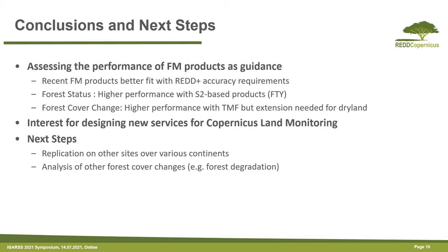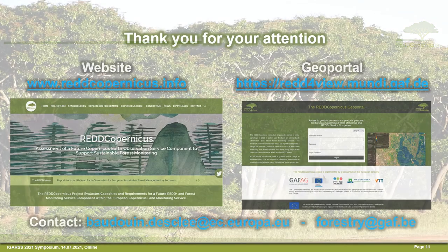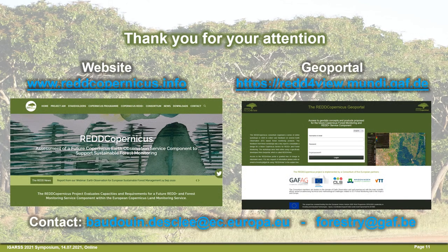The assessment of the performance of forest monitoring products is important as guidance, and these recent products better fit the REDD+ accuracy requirements. For forest status, we have better performance with Sentinel-2 based products like FTI, and for forest cover change, higher performance with TMF, though an extension is needed for drylands. This kind of study is very important for designing new services like the Copernicus monitoring services. The next step is to replicate this analysis on other sites and analyze other forest cover change products. I invite you to visit our website and geoportal for an overview of the different products. Thank you very much for your attention.